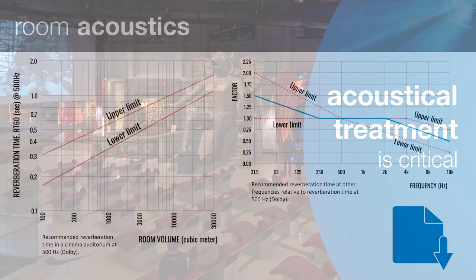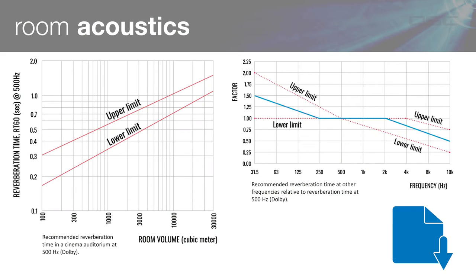We're not going to cover these charts in detail in this video, but we do want you to know they exist. They represent reverberation tolerances depending on room volume and frequency band. There's a symbol indicating that these can be downloaded in the links and downloads section.